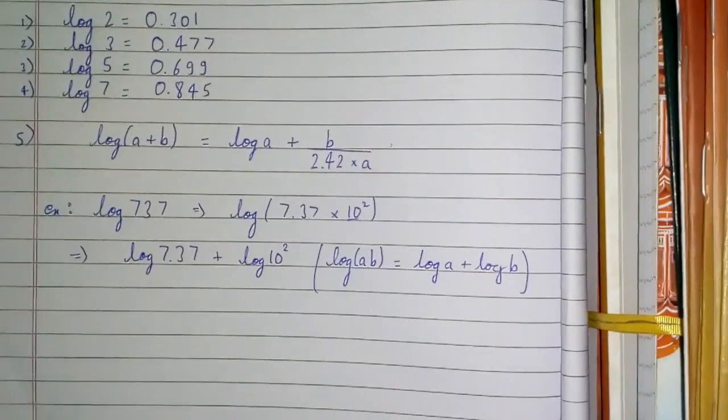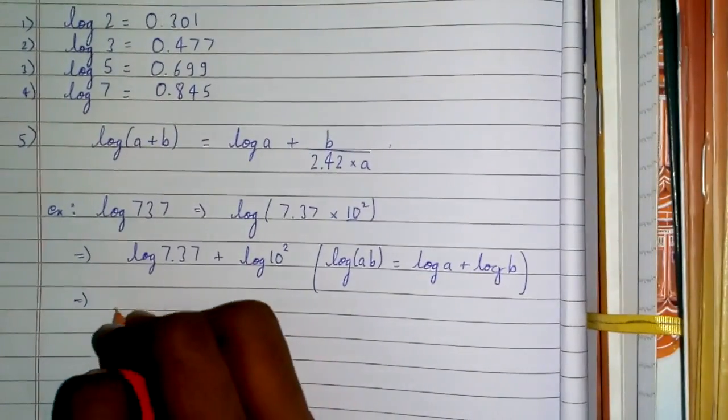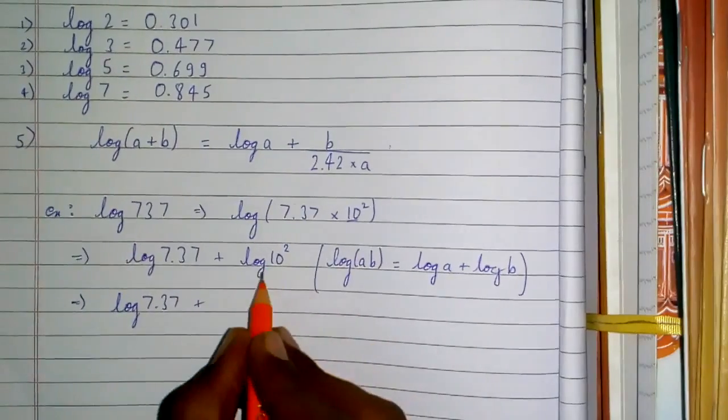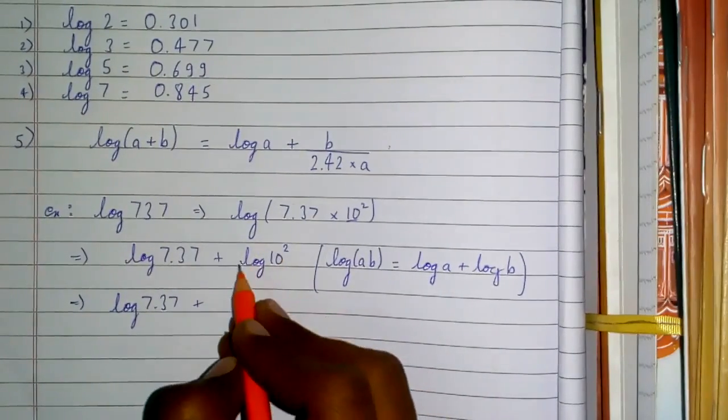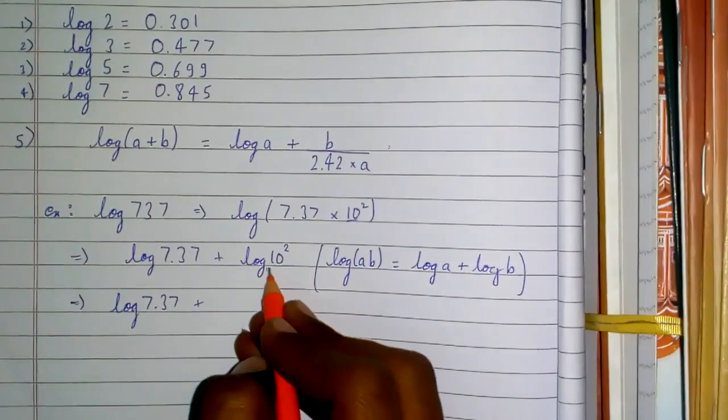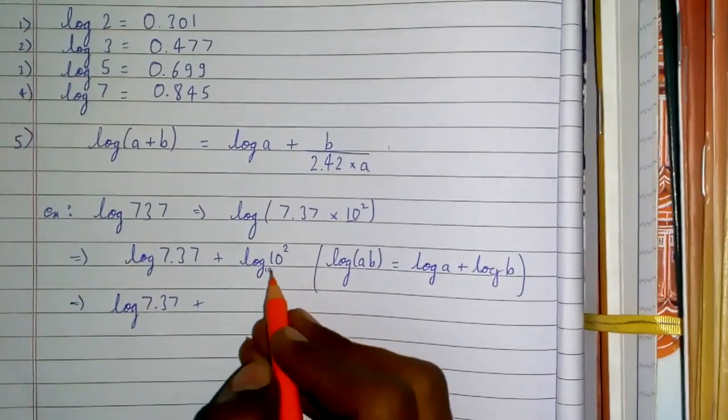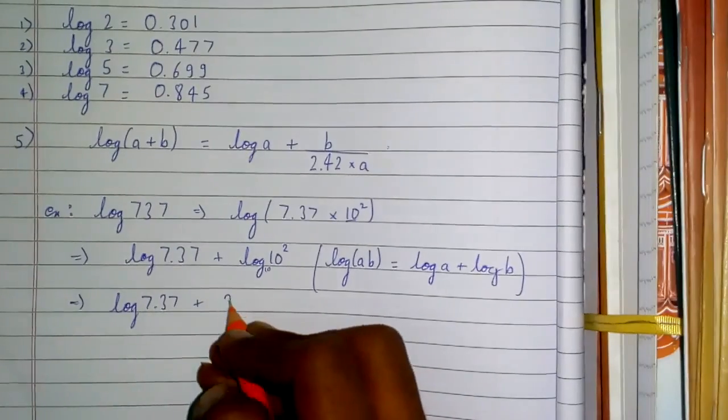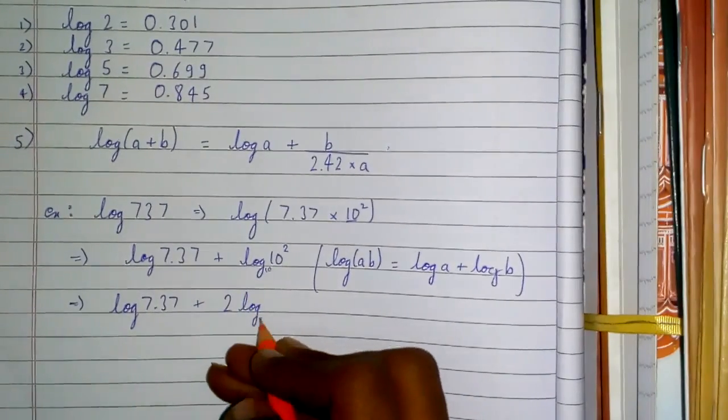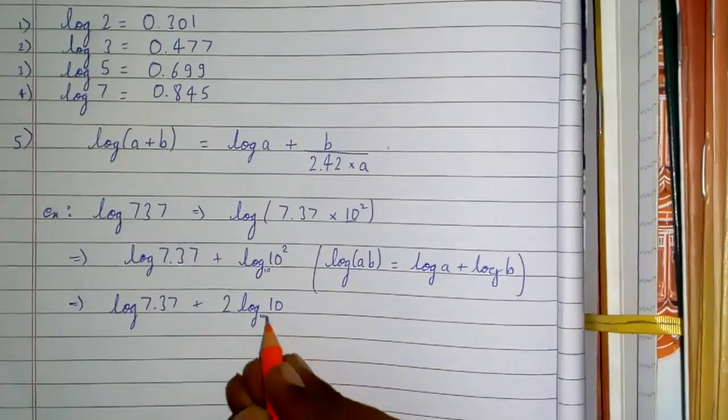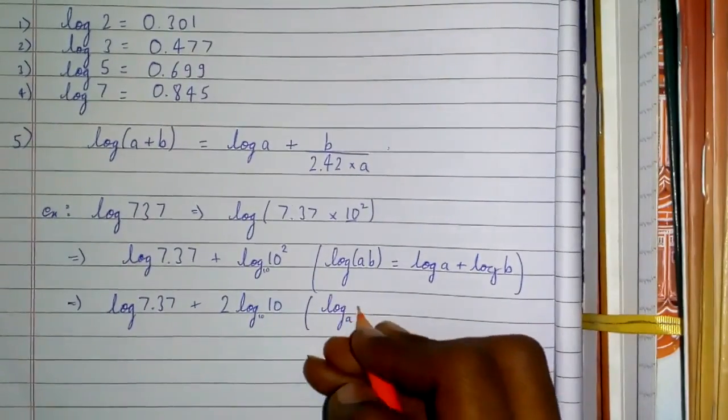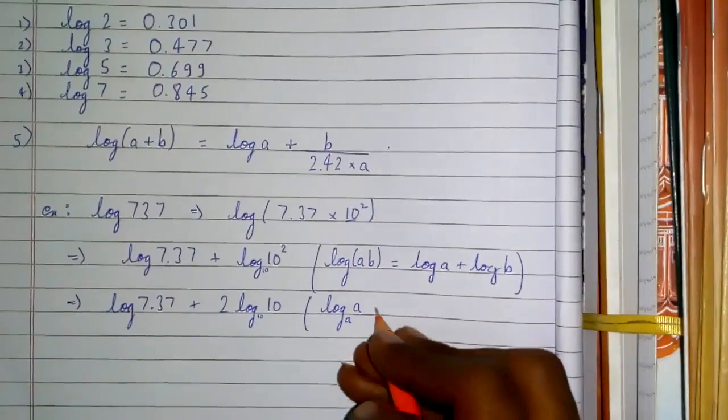In the next step, we have log 7.37 as is, then we'll simplify this. 2 comes down here, and log base 10 of 10 equals 1 because log base a of a equals 1.